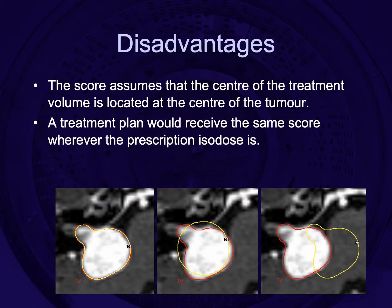The disadvantages are that this score assumes the centre of the treatment volume is located at the centre of the tumour. A treatment plan would receive the same score wherever the prescription dose is located. These three treatment plans all have the same PITV ratio, even though the one on the right is almost a complete geographical miss.